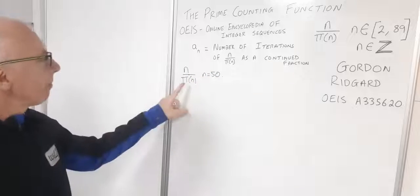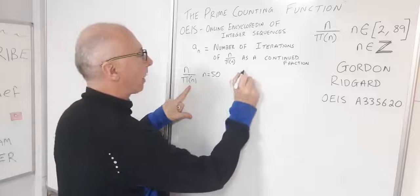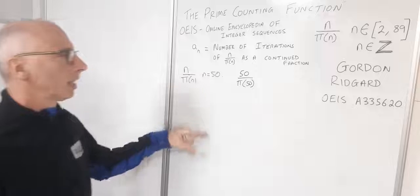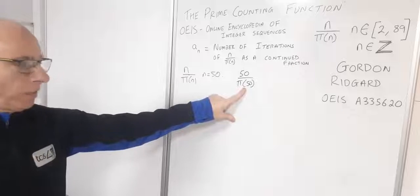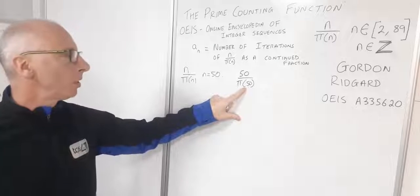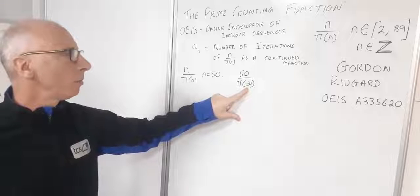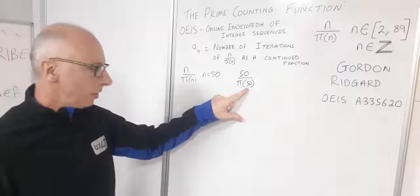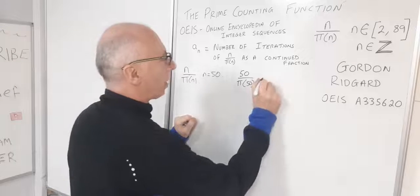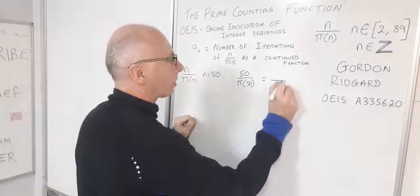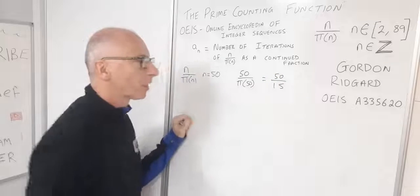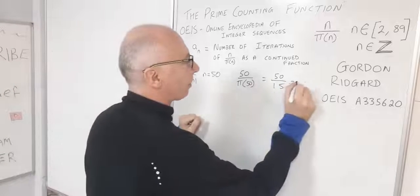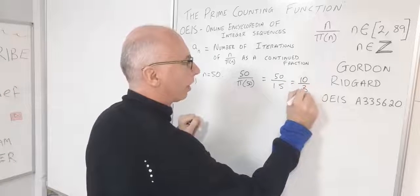So n over π(n) where n equals 50. If we write this down we'll have 50 over π(50). Now π(50) means the number of prime numbers up to and including the number 50. I'm not going to go over that in detail but you can work this out for yourselves. We know that π(50), there is 15 prime numbers up to 50. So we can simplify this off just dividing by 5 and we'll get 10 over 3.